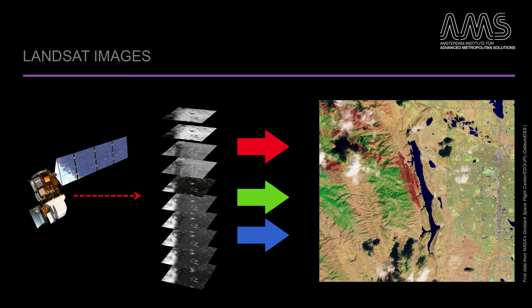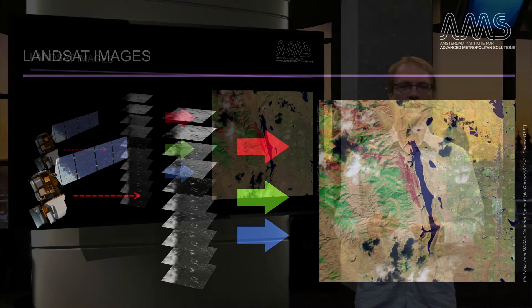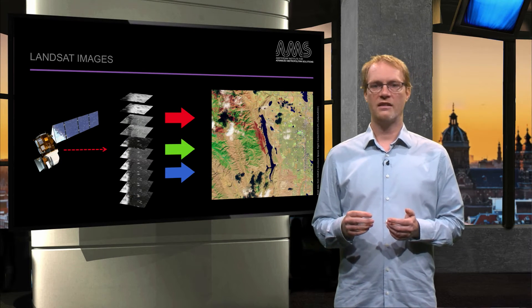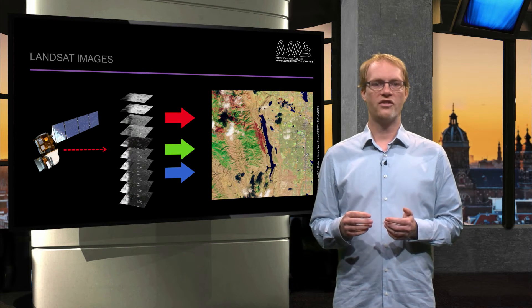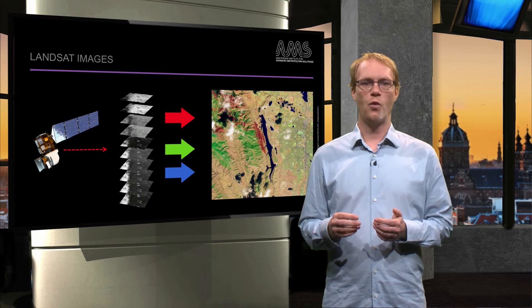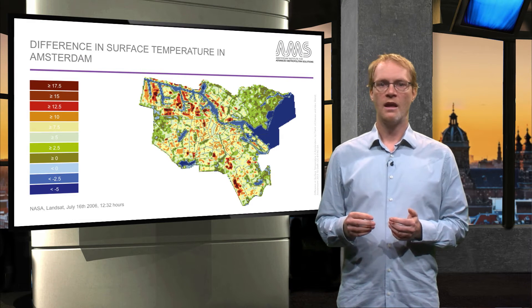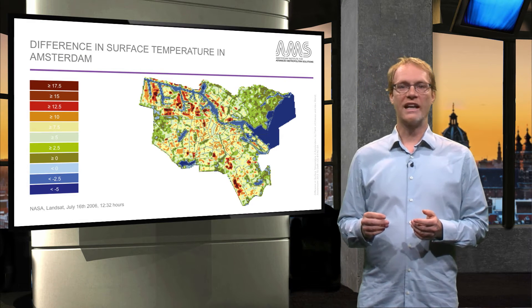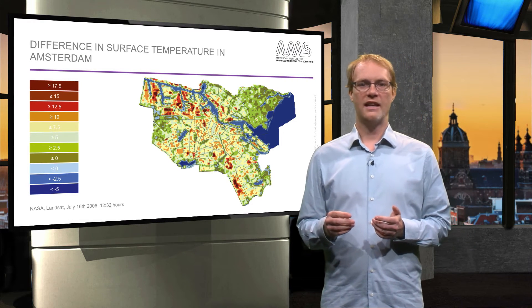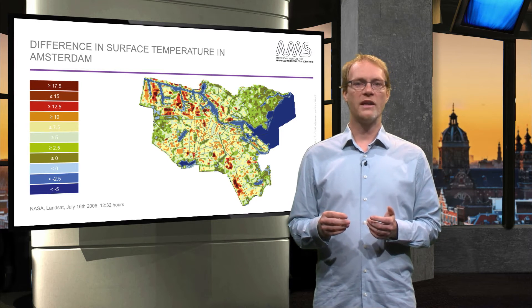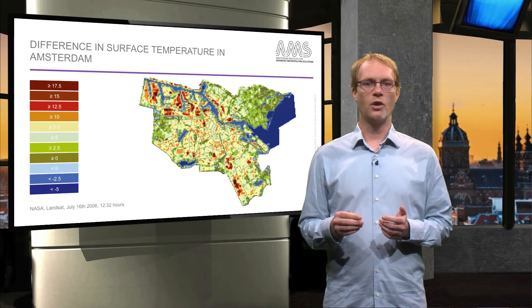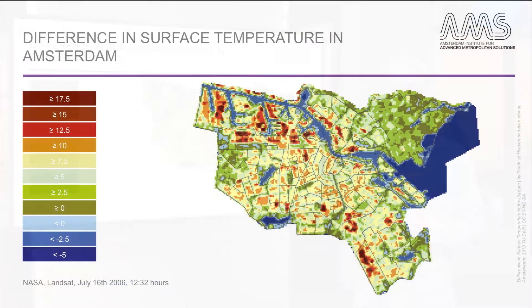Satellite images are publicly available through the link provided in your lecture notes. Landsat 8 has two instruments: the operational land imager, which collects data in visible, near-infrared and short-wave-infrared wavelengths, and the thermal infrared sensor, which measures heat emitted from the Earth's surface. Using a combination of these wavelengths allows us to make surface temperature maps like the one of Amsterdam you see here.